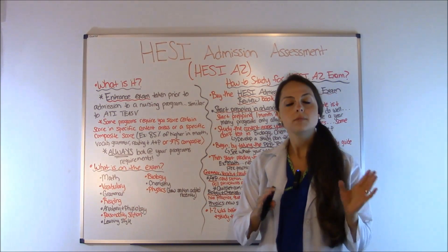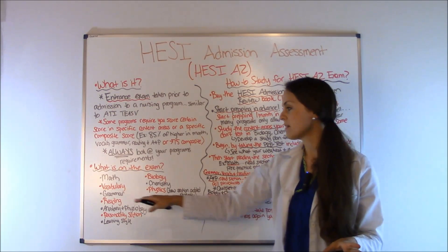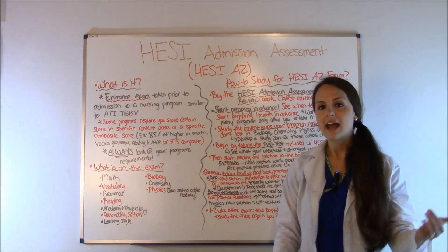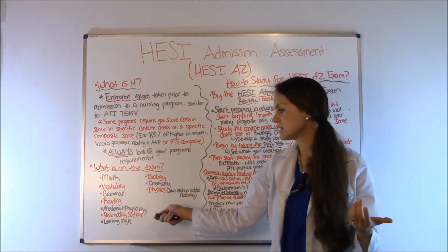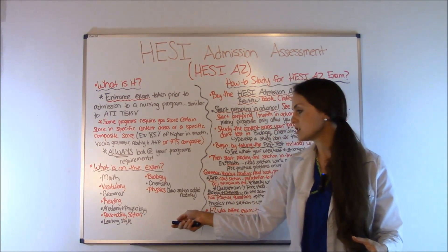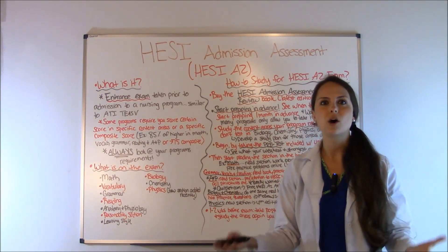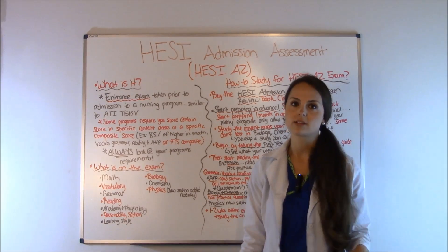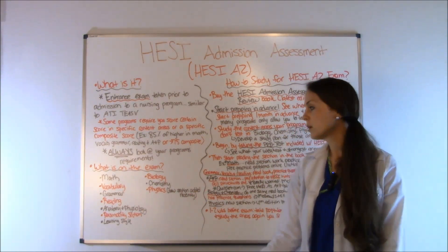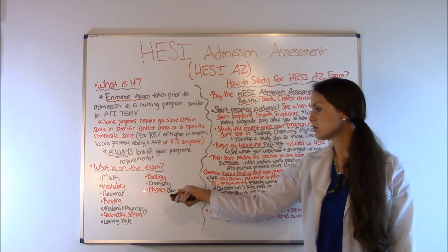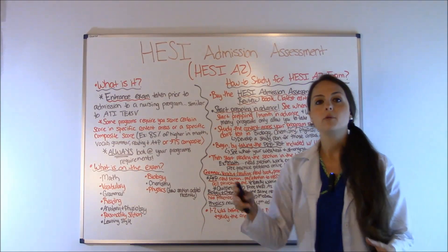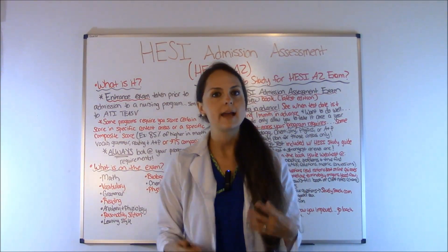Some universities will not require the anatomy and physiology — they'll just want you to take math, vocabulary, grammar, and reading — while most are now requiring anatomy and physiology. Other sections include the personality section and the learning style, and those typically don't require you to study. Some programs also require biology, chemistry, and a newer section, physics. So look at the program you want to attend and see what they require.